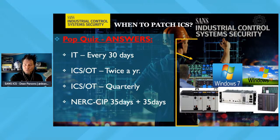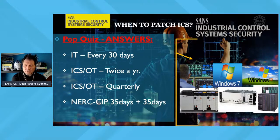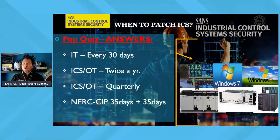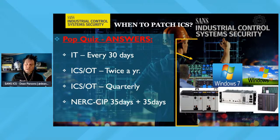A viewer noted that patching at level 3 down to level 1 can only be done with control system manufacturers' recommendations. Absolutely — patching the lower levels means manufacturers and vendors are going to be part of that solution, along with your engineering staff. This is not going to be just your security team patching the ICS; you'll have significant involvement from engineering folks as well.